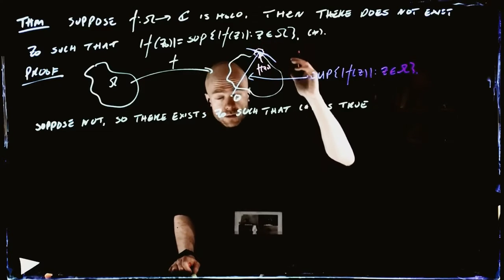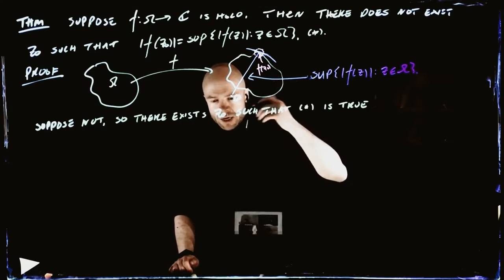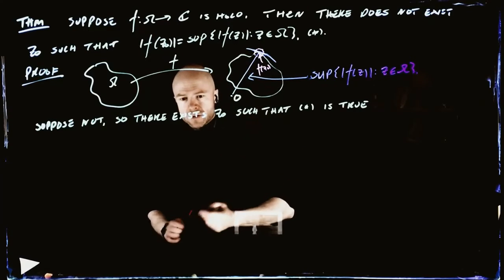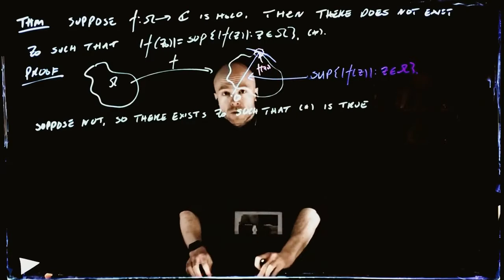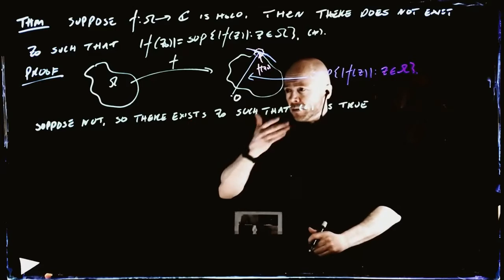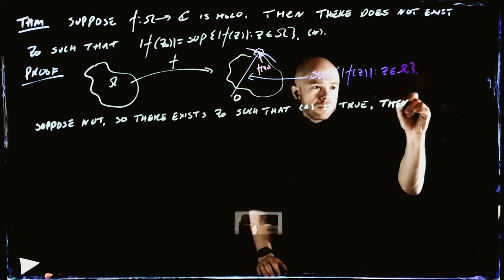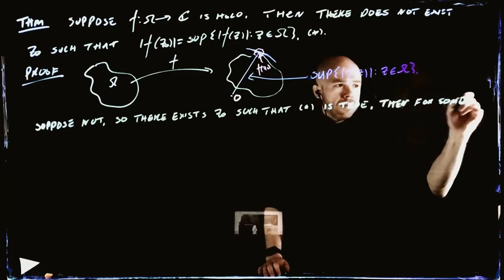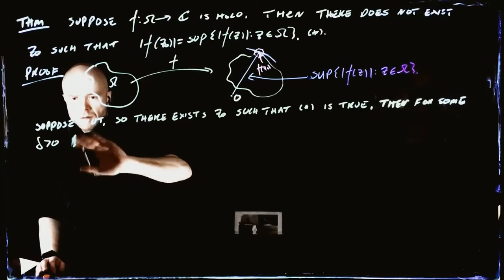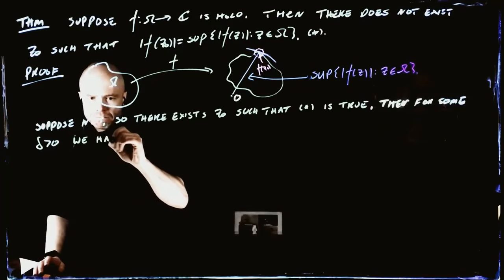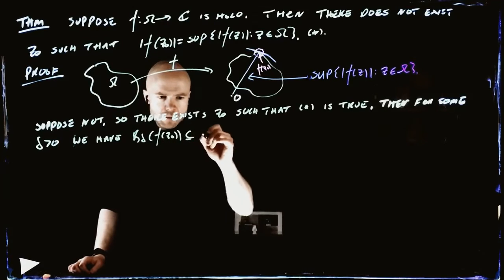So from the pictures, this theorem is really not surprising at all. But now what we're going to do is describe these pictures in the language of maths to create a proof. Which is what we do essentially all the time. So suppose such a Z0 is true; then for some delta bigger than zero, we have the ball of radius delta around F of Z0 is actually contained within F of omega, because F of omega is open.